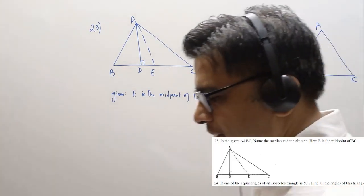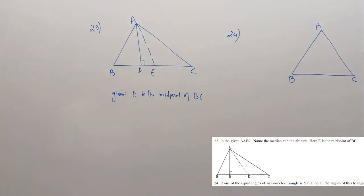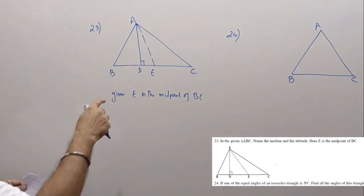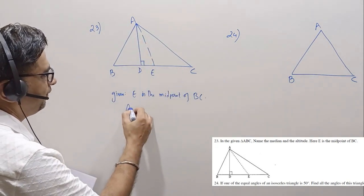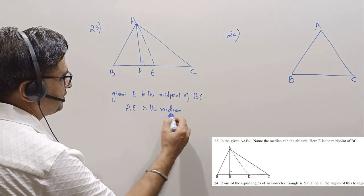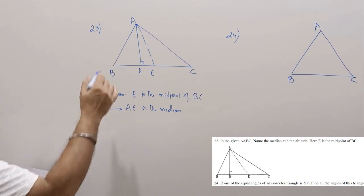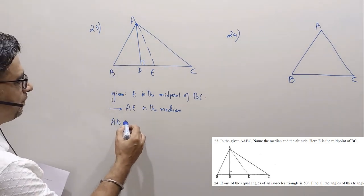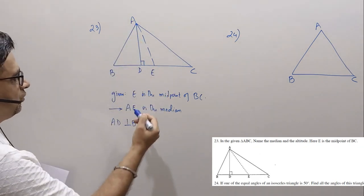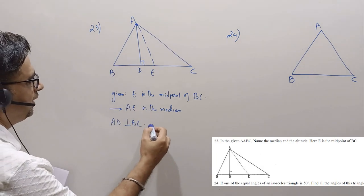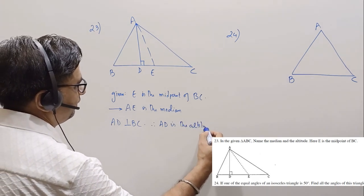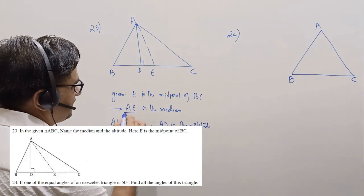Coming to question number 23. In the median or the altitude — the median is a line drawn from a vertex to the midpoint of the opposite side. As you can see, E is the midpoint of BC, and therefore AE is the median. We also see that AD is perpendicular to the opposite side. A line drawn from a vertex and perpendicular to the opposite side is the altitude. AD is perpendicular to BC, and therefore AD is the altitude.